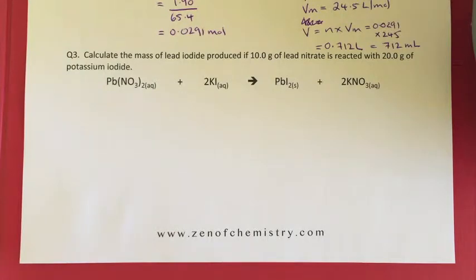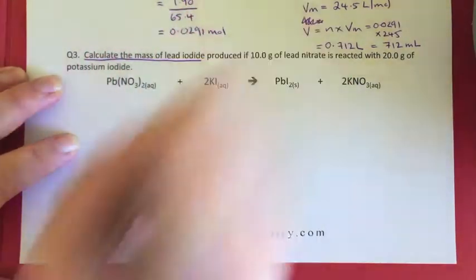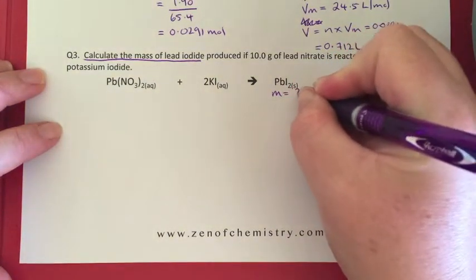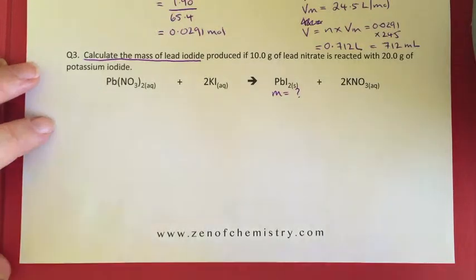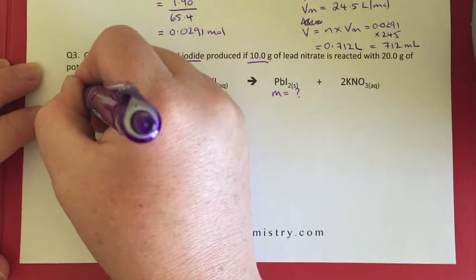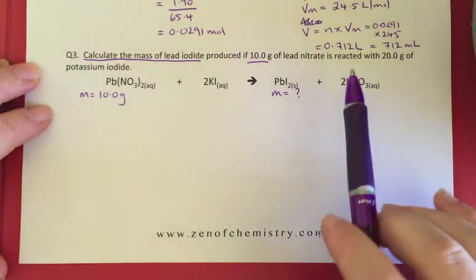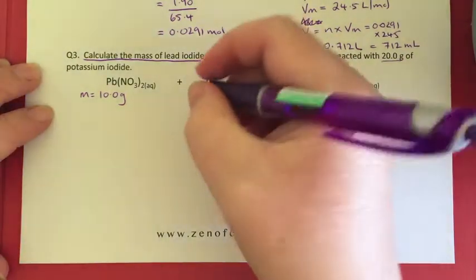So let's start with what's in this question. It says calculate the mass of lead iodide. Our finishing point here is our mass of lead iodide. We're starting with 10 grams of lead nitrate, so we've got M equals 10.0 grams and it's reacted with 20 grams of potassium iodide.